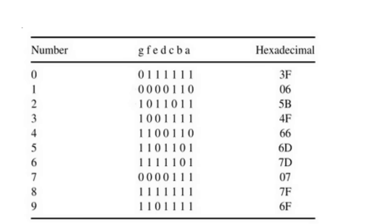Before we start the project, the easiest way to display a number on a 7-segment is to find a lookup table — a table showing numbers and the corresponding segments that should be turned on or off, and the corresponding value to send to the port where the display is connected.